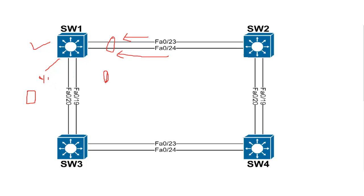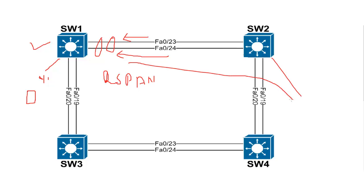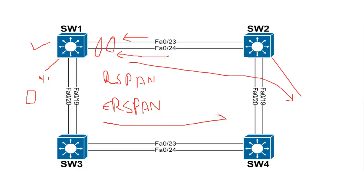SPAN only works within a switch — the source and destination are within the same switch. RSPAN means the destination can be on a different switch in the LAN. ERSPAN means it can forward traffic to a different Layer 3 domain — it creates a GRE tunnel and sends the traffic over to a different location.